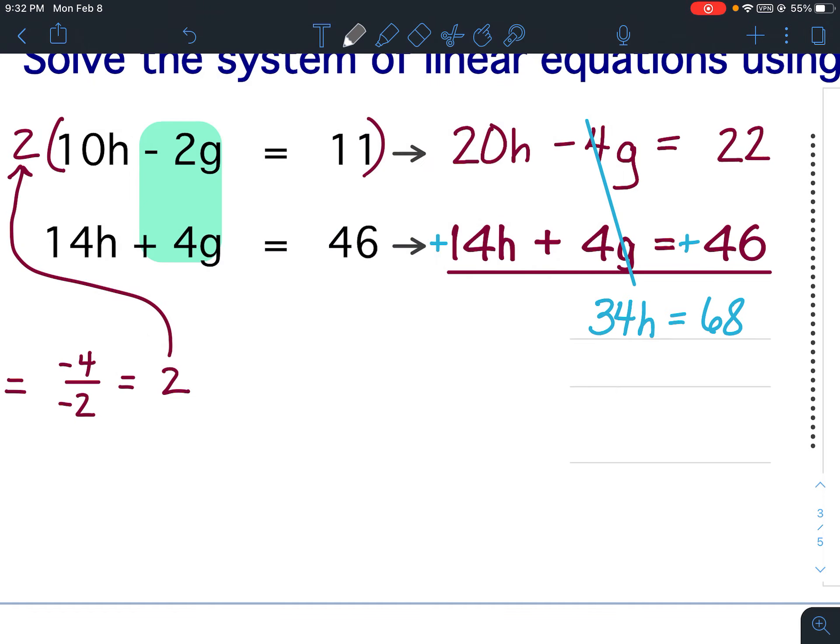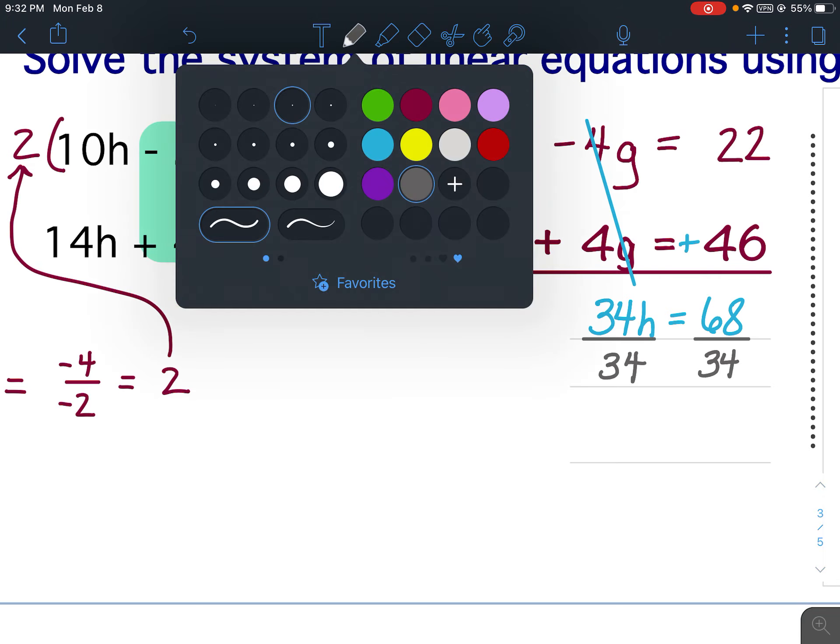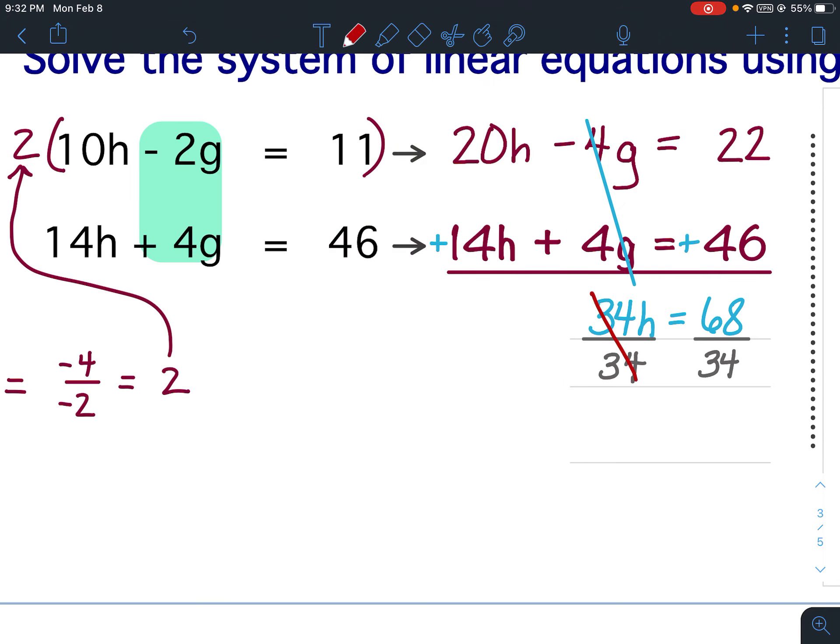To isolate the variable, I'm going to divide both sides by 34. That allows me to cancel the 34s. Bring down the h.